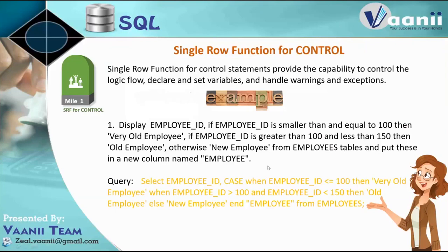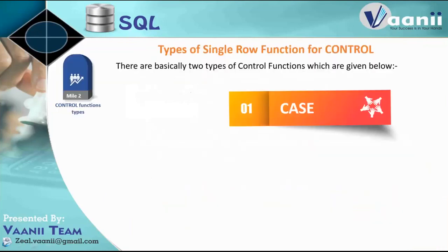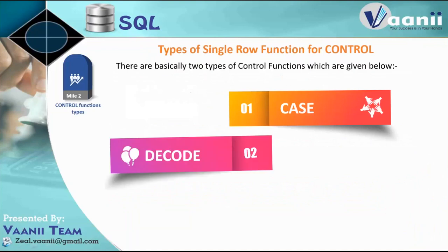Here is one example of a control statement: if employee ID is less than 100, then 'very old employee'; if greater than 100 and less than 150, then 'old employee'. This is just an arbitrary example of the kind of if-else statement we have. So the two control statements we actually have are CASE and DECODE.